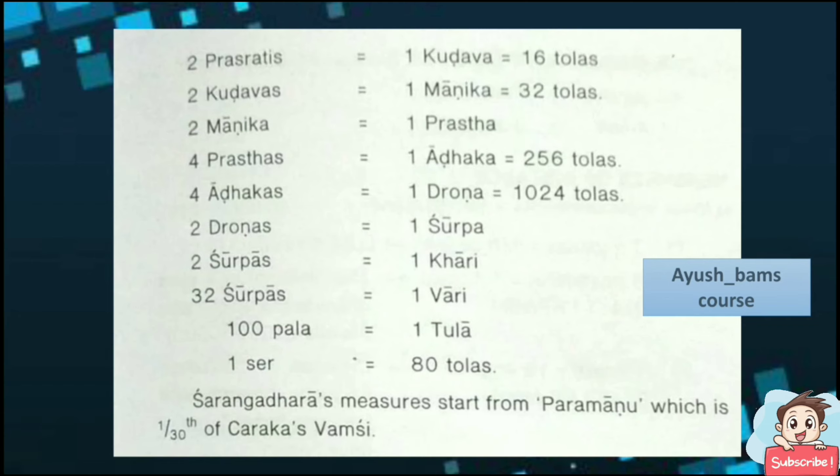2 Manika equals 1 Prashta. 4 Prashtas equals 1 Adhaka. 4 Adhakas equals 1 Drona. 2 Dronas equals 1 Surpa. 2 Surpas equals 1 Kari. 32 Surpas equals 1 Vali. Whereas 100 Pallas equals 1 Tula.